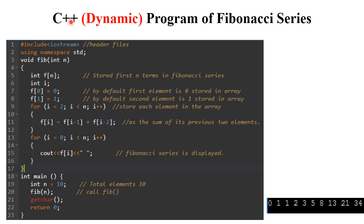Now let's look at the C++ dynamic program of Fibonacci series. First are the header files: iostream.h, which is the input-output stream. This header file includes cout, cin, variables, and all data types. The program always starts with the main function — integer main. Next, integer n equals 10, meaning we calculate the first 10 Fibonacci numbers.